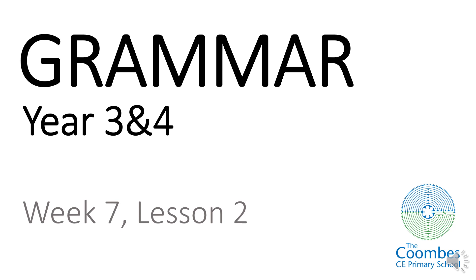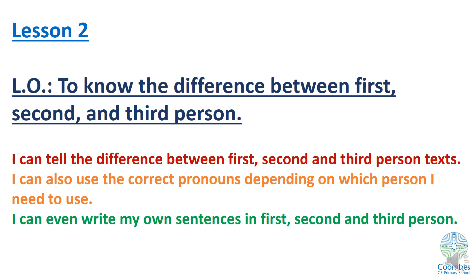Welcome everyone, these are grammar lessons for year three and four children, and this is week seven, lesson two. Our focus for this week's work was diary writing. We said yesterday that we would be doing some skills work first, and we're going to continue that today. Our learning objective for this lesson is to know the difference between first, second, and third person.